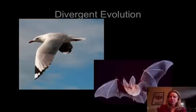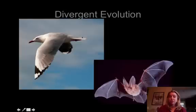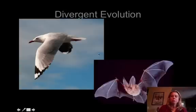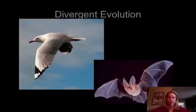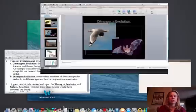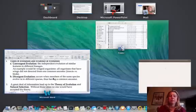Looking at divergent evolution, we again have the example of wings. But here, the structure is actually quite similar — both have bones on the inside and are made of calcium carbonate. So it's pretty likely these two evolved from a similar species and then diverged from there. That's how you think about convergent versus divergent evolution.